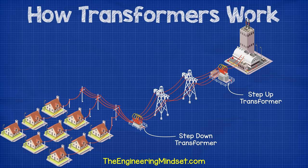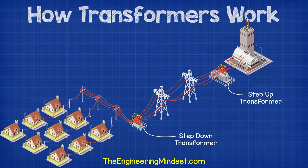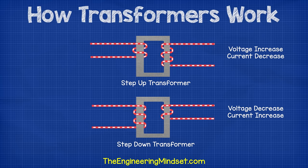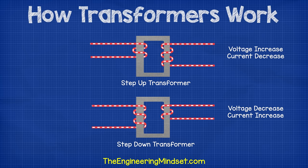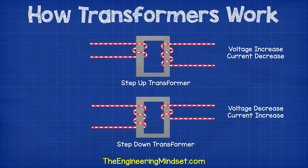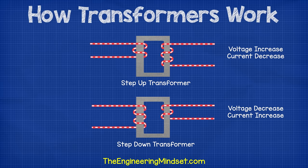Transformers are manufactured to be step-up or step-down transformers, and these are used to increase or decrease the voltage simply by using a different number of turns within the coil on the secondary side. In a step-up transformer, the voltage is increased in the secondary coil, which means the current will decrease. We'll look at why that occurs in a later electrical engineering video. To increase the voltage in a step-up transformer, we just need to add more turns to the coil on the secondary side than the primary side.